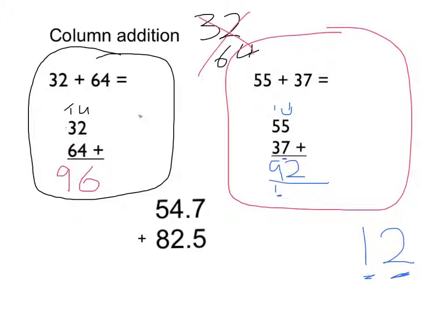It's exactly the same for decimal numbers. But as long as you line up the tens, the units and in this case the tenths and line up those decimal points, you work the same way. So my first step is to put the decimal point in the right place. Starting on my right, 7 add 5 is 12. Put my 1 underneath. 4 add 2 is 6, add my 1 is 7. 8 add 5 is 13. So that would be 137.2.